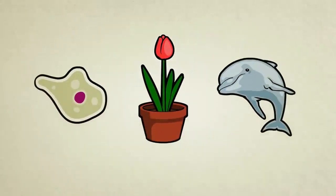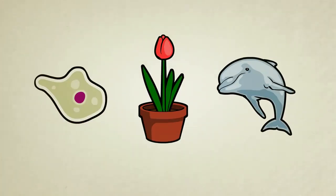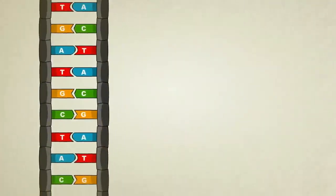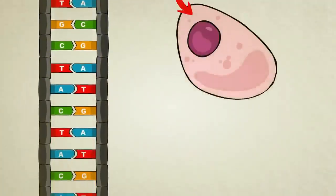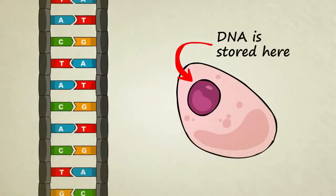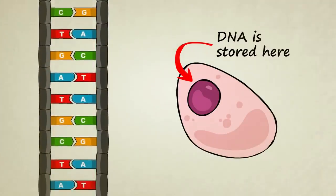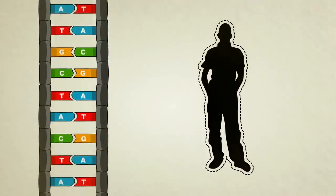All healthy living things, from single-celled amoebas to flowers to dolphins, are capable of reproduction. We have children, we make copies of ourselves. We do this by duplicating our DNA and passing that DNA on to future generations. DNA is a chain-like chemical stored inside each one of your cells, which tells them how to grow and function. Your DNA contains coded information on how to build you.